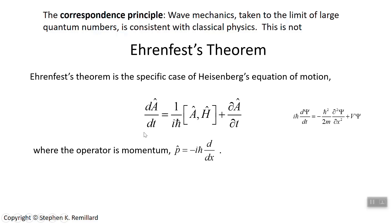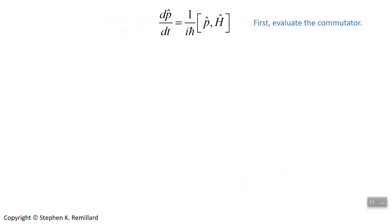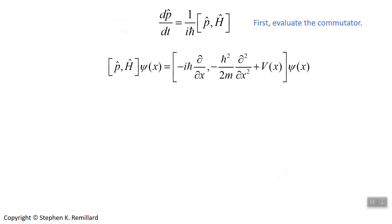So in many situations, the Heisenberg equation of motion reduces to: the time derivative of the observable's operator equals the commutator of that observable with the Hamiltonian — as is the case with momentum. So we're going to replace A with momentum, throw out the partial derivative of momentum with time, and evaluate the commutator of momentum with the Hamiltonian. That's the next step — you may have done this before, in which case you can skip ahead.